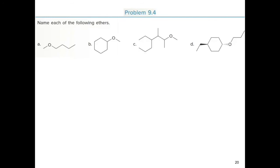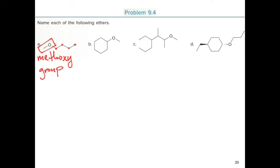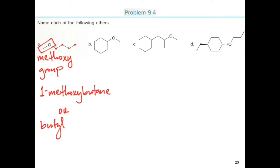Practice problem 4: name each of the following ethers. For the first one, the simpler substituent is a methoxy group. The parent chain contains 4 carbons — a butane. So the IUPAC name is 1-methoxybutane. The common name is butyl methyl ether.